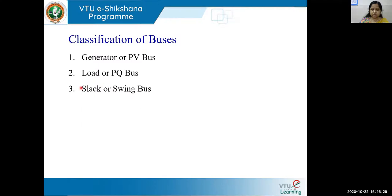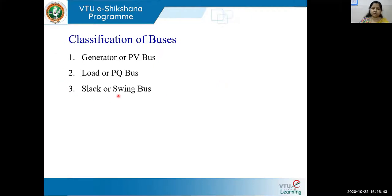For the slack bus, the two known parameters are the magnitude of the voltage and the angle, while P and Q are unknown. Let us now understand the whole concept once again in a tabular form.